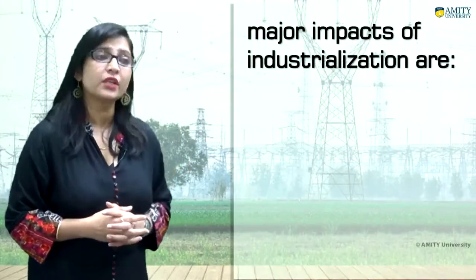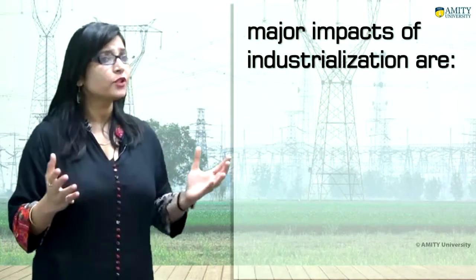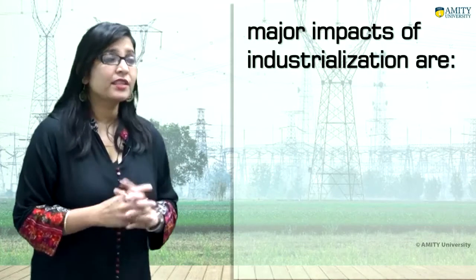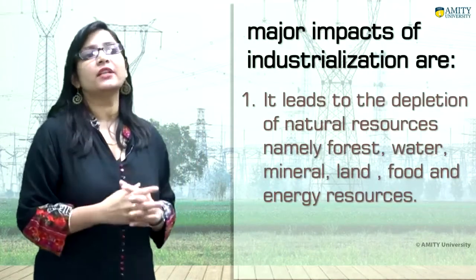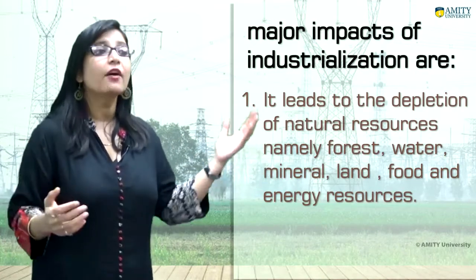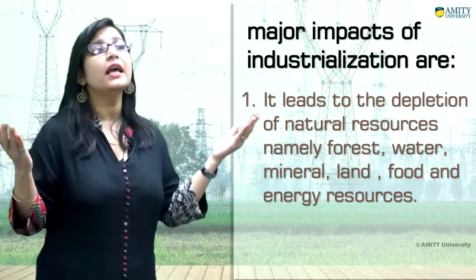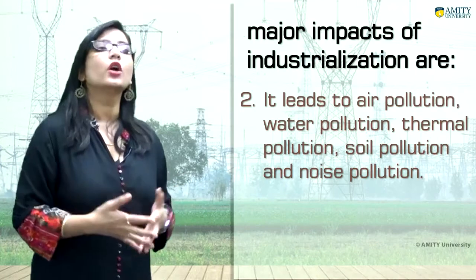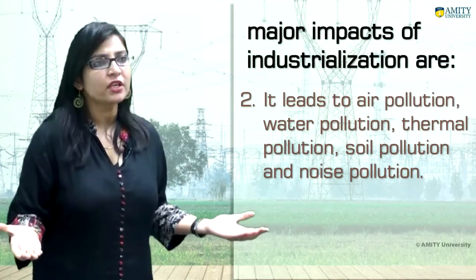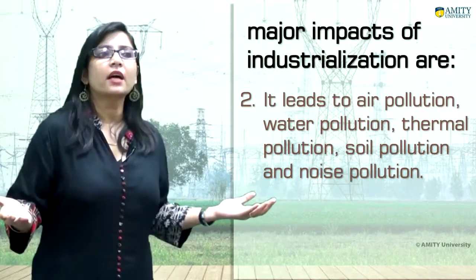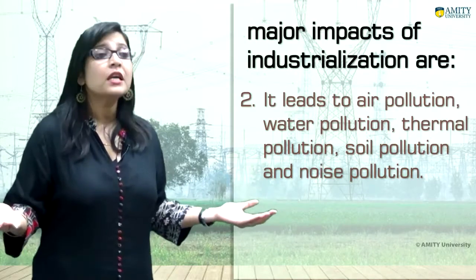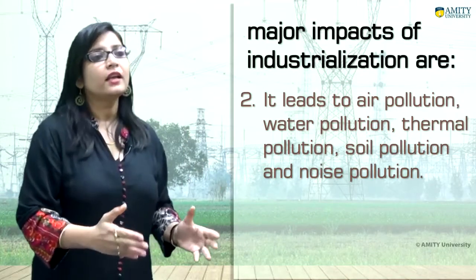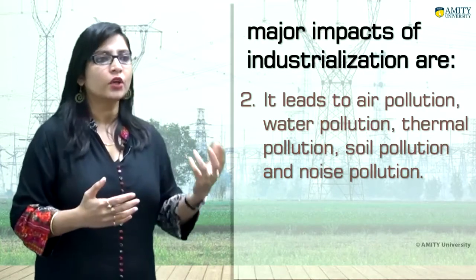Now let's discuss the major negative impacts of industrialization. Number one, it leads to the depletion of natural resources — namely forests, water, minerals, land, food and energy resources — because every industry requires raw material from nature. It also leads to air pollution, water pollution, thermal pollution, soil pollution, and noise pollution. Effluents from industries go directly into rivers and contaminate them. Smoke from chimneys and stacks contributes to air pollution, and chemicals go into land and food, contaminating them. So wherever there is industry, it gives rise to air, water, thermal, soil, and noise pollution.